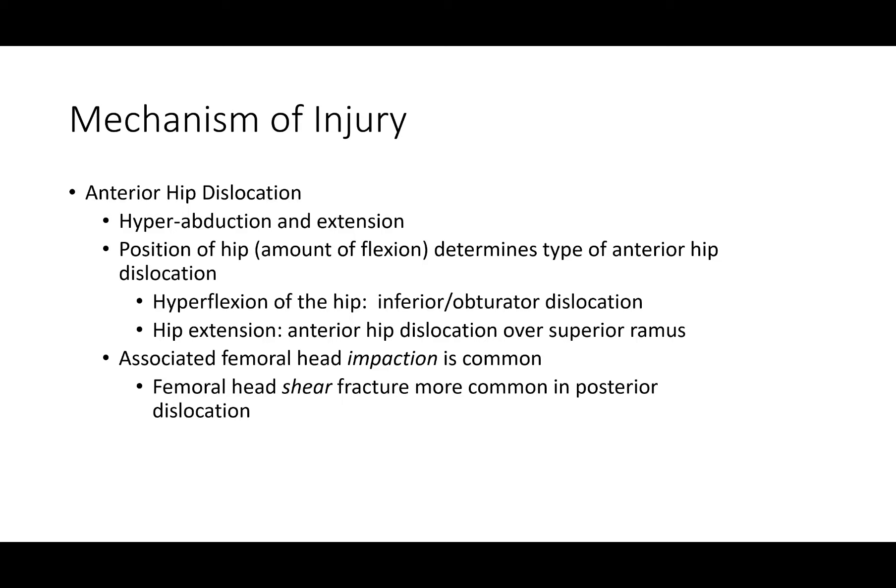Anterior hip dislocations typically happen with hyperabduction and extension. The position of the hip — specifically the amount of flexion — determines the type of anterior hip dislocation. It can be inferior, such as an obturator dislocation, or with extreme hip extension, you can get an anterior hip dislocation. With anterior dislocations, femoral head impaction is common, whereas with posterior dislocations, you tend to get more of a shear injury.